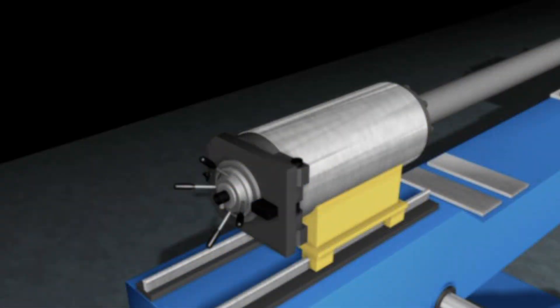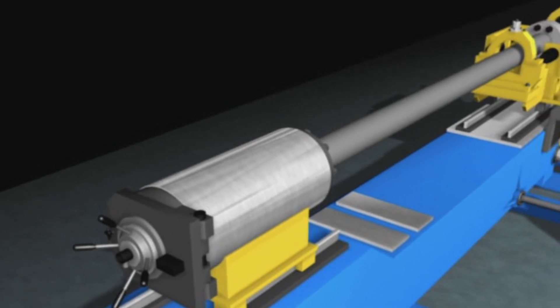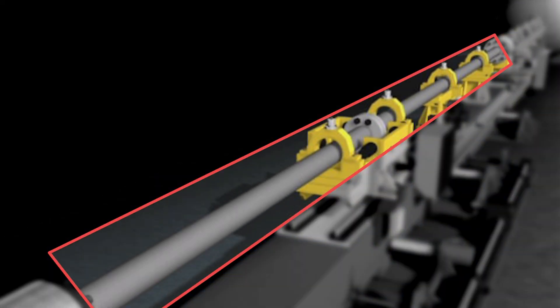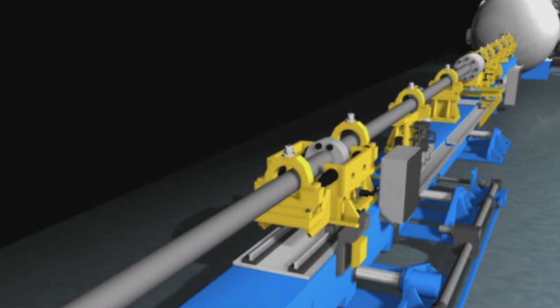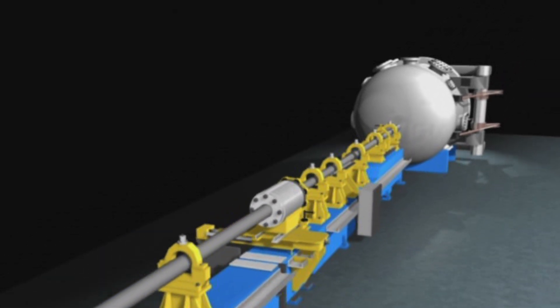The breech is the first stage of the gas gun. Gunpowder is placed inside to drive the overall experiment. The pump tube is filled with a light gas, typically hydrogen, and is the main driving force for firing the projectile down the launch tube.